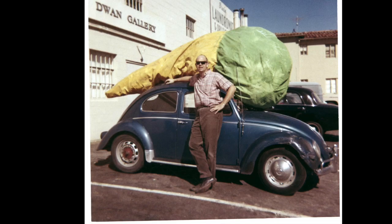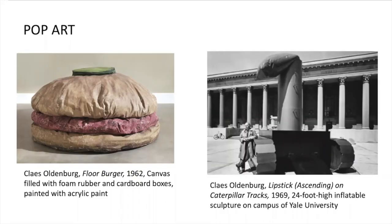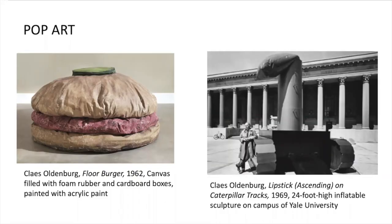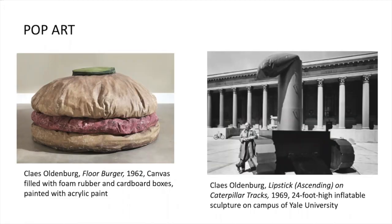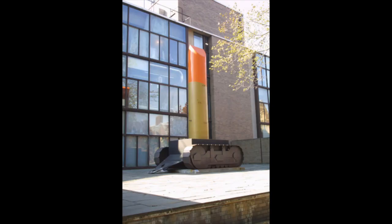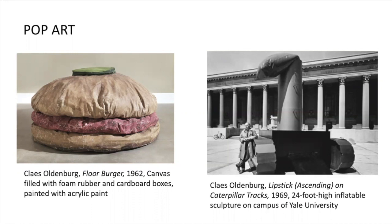Claes Oldenburg is known for his gigantic sculptures of everyday items, like a gigantic burger made out of canvas sewn together and filled with foam rubber and cardboard boxes. He's also known for his Spoon Bridge and Cherry in Minneapolis at the Walker Art Center. He also made the 24-foot-high sculpture Lipstick Ascending on Caterpillar Tracks from 1969, in collaboration with architecture students at Yale, his alma mater. Here we have the juxtaposition between the tank-like imagery and the giant lipstick tube, implying that the US was obsessed with beauty and consumption, and that both were fueling and distracting us from the ongoing violence in Vietnam. He playfully critiqued the hyper-masculine rhetoric of the military and the blatant consumerism of the United States.